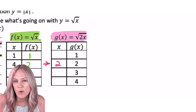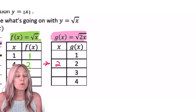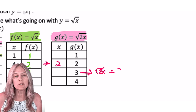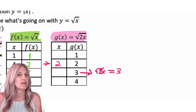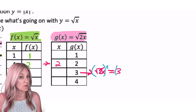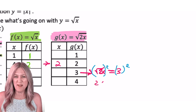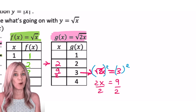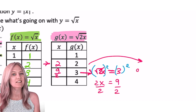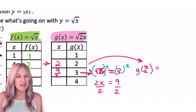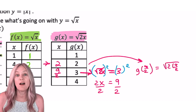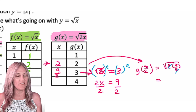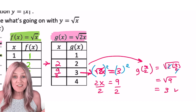Let's look at one more: output of 3. Square root of 2x equals 3, square both sides, 2x equals 9, divide by 2 — input is 9 halves. Going forward: g of 9 halves equals square root of 2 times 9 halves. The 2's divide out. Square root of 9 is 3.